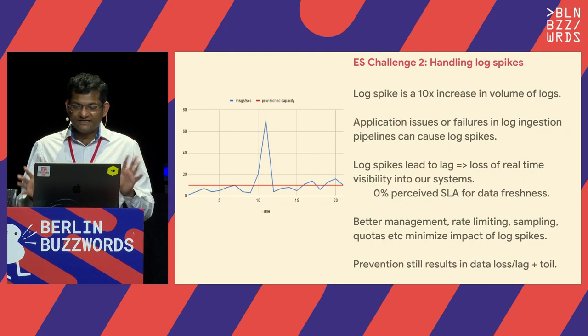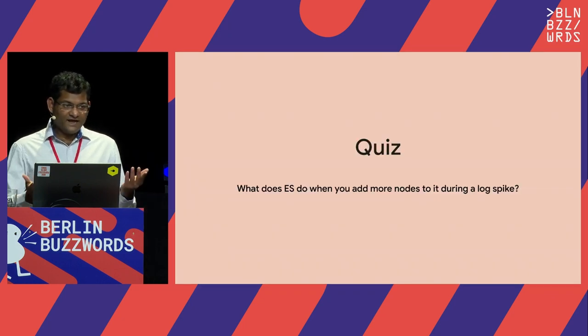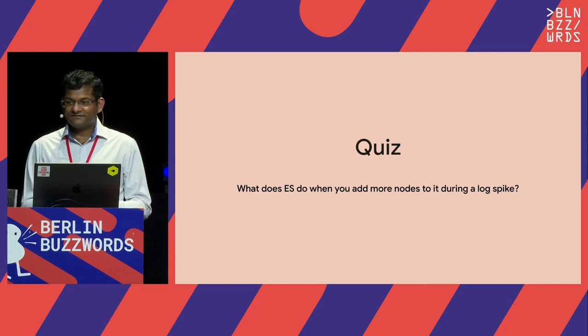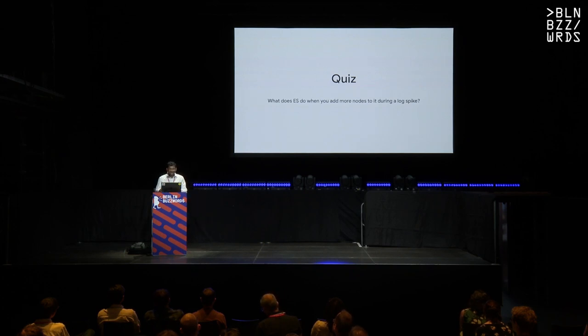The only solution to handle a log spike is to add capacity. But what does Elasticsearch do when you add more nodes during a log spike? It reallocates the shards first — which is the worst time to do it. Not only are you adding capacity because there isn't enough, but that capacity is being used to repartition the data, reducing existing indexing throughput. So your existing indexers slow down, making the problem worse. These are the kinds of constraints that distributed databases impose on us.